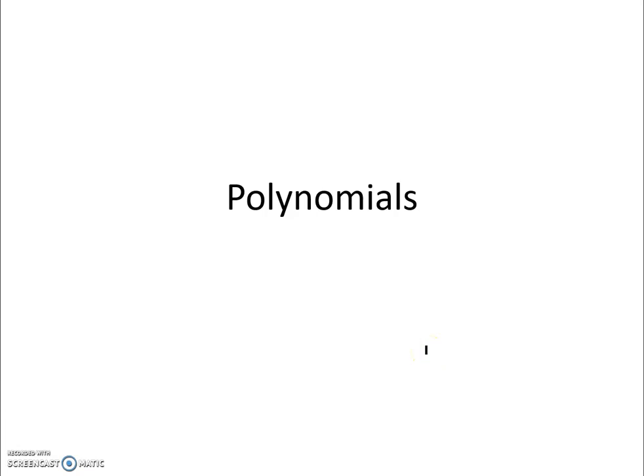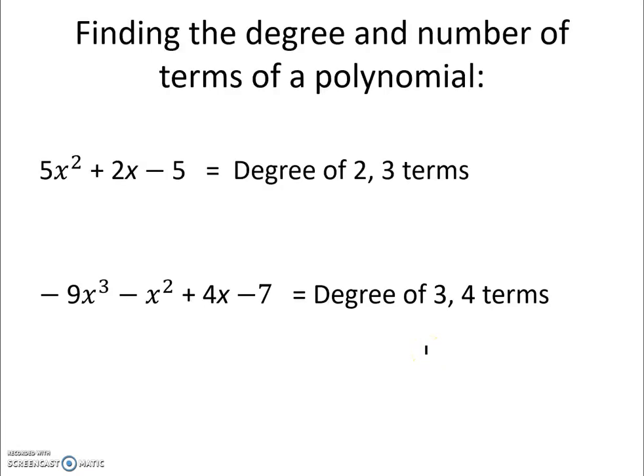Today we're going to be looking at polynomials. First we're going to be finding the degree and the number of terms of a polynomial. The first polynomial we're given is 5x squared plus 2x minus 5.